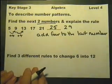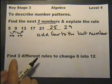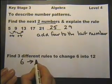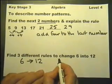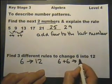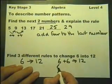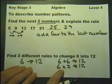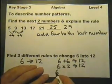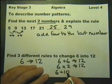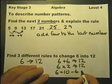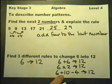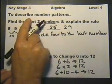Another aspect of describing number patterns: find three different rules to change 6 into 12. One way: 6 add 6 gives 12. Another way: 6 multiplied by 2 equals 12. A third way: 6 add 10, take away 4. There are in fact many possible answers. That's rules and describing number patterns.